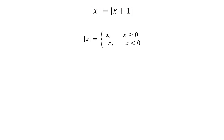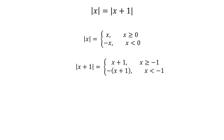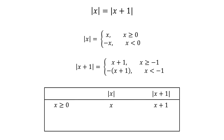Modulus of x equals x for x greater than or equal to 0, and it equals negative x for x less than 0. Similarly, modulus of x plus 1 equals x plus 1 for x plus 1 greater than or equal to 0, or x greater than or equal to negative 1, and it equals negative of x plus 1 for x plus 1 less than 0, or x less than negative 1. So we can have three intervals here.